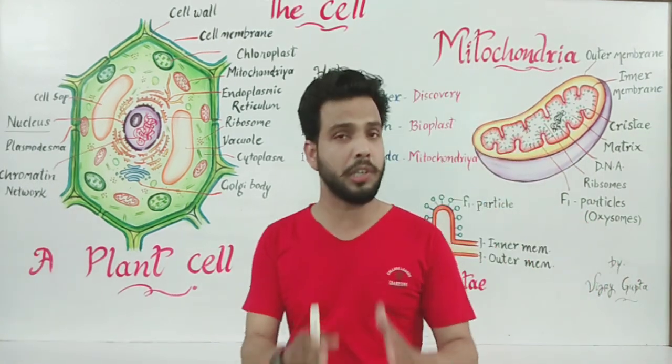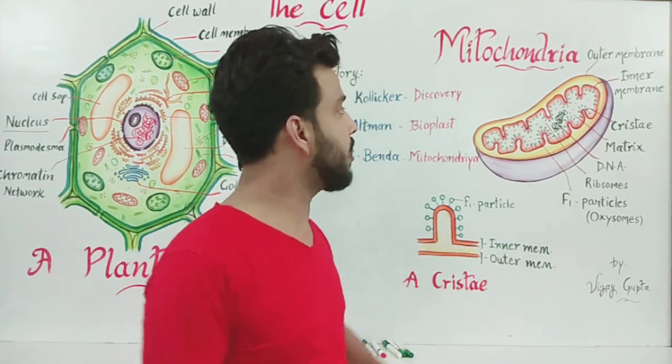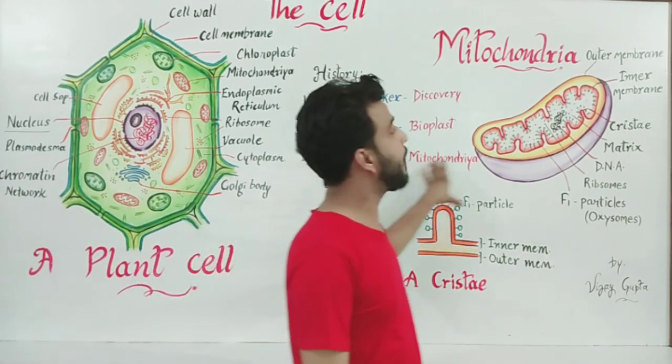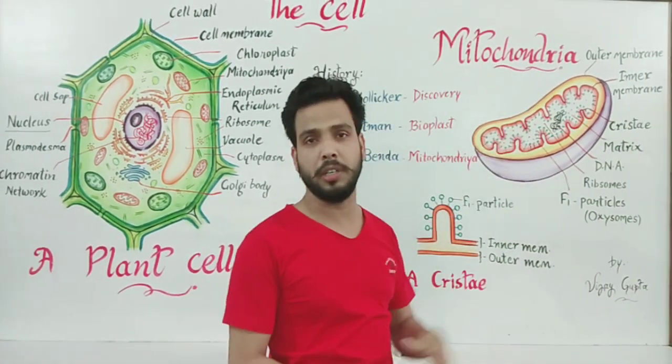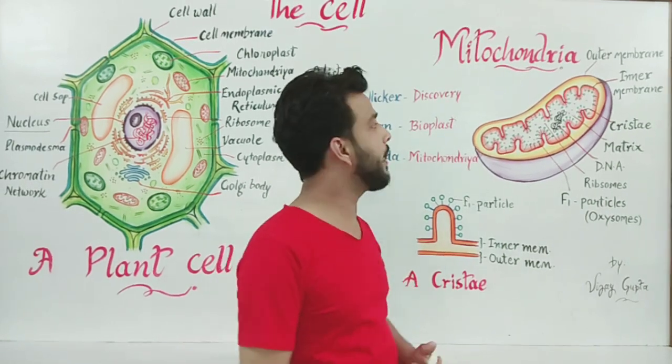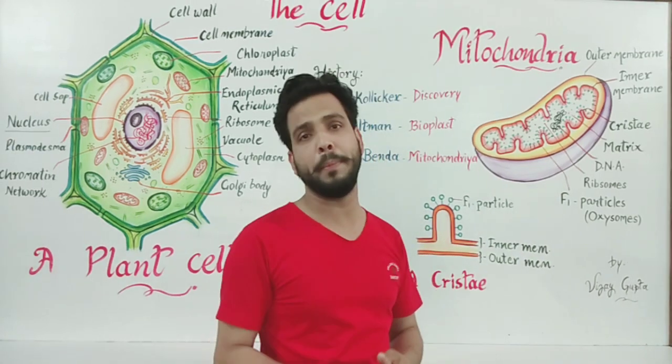If we see the structure of mitochondria, the electron microscopic structure of mitochondria, then we can understand with the help of a diagram. In this diagram, you may see that mitochondria is a rod-shaped structure. Sometimes it may be oval-shaped or dumbbell in shape, but generally it is a rod-shaped cell organelle bounded by two membranes.